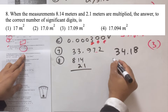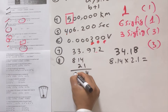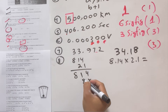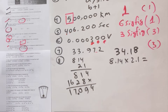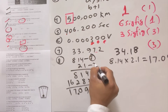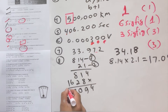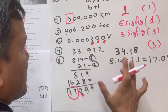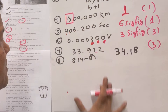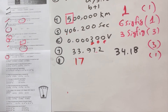Number eight: multiply 8.14 times 2.1. The result is 17.094. Now, you cannot have more significant figures in the final answer than the least precise measurement — 2.1 has two sig figs. The last digit is less than five so you don't round up, giving 17. That is option number one.